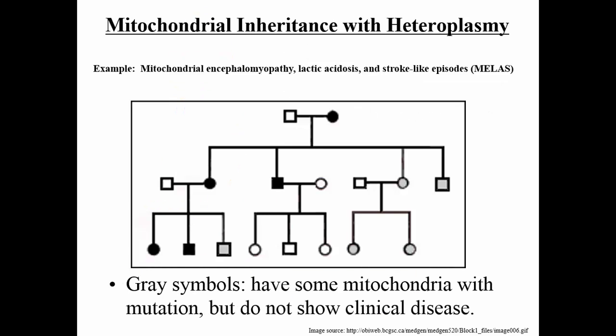When looking at these pedigrees, you can also identify cytoplasmic inheritance by the fact that you see some figures that are totally darkened but others that are only shaded. The shaded figures represent individuals who are somewhat affected by the abnormality, again probably because they are heteroplasmic.